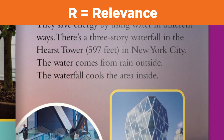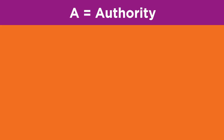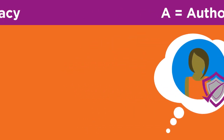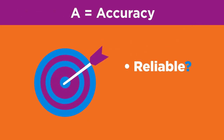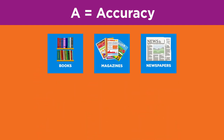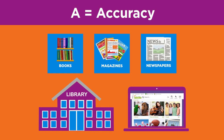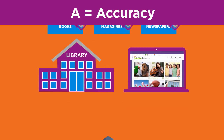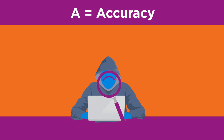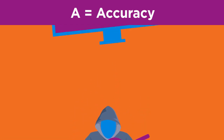Next, let's look at the two A's in TRAP. The first is Authority: ask yourself, is the author an expert? The second A is Accuracy: ask yourself, is the information reliable and correct? For books, magazines, or newspapers that you find in a library or database, an editor or librarian has already checked for authority and accuracy. However, since anyone can post information to the internet, you need to evaluate internet information for authority and accuracy.